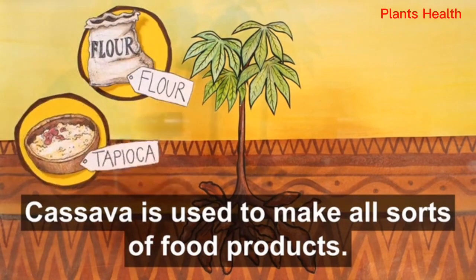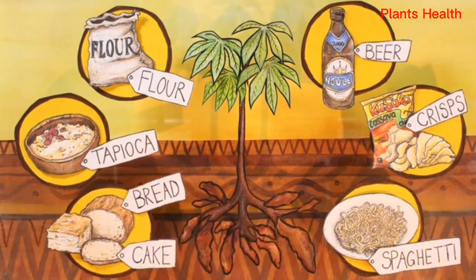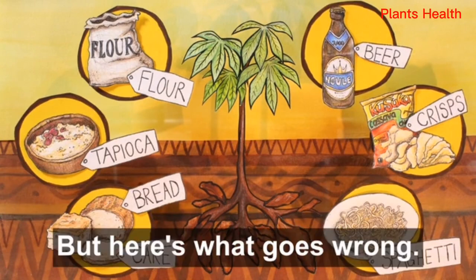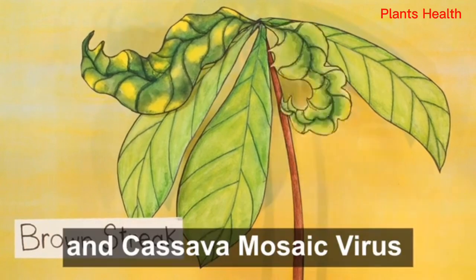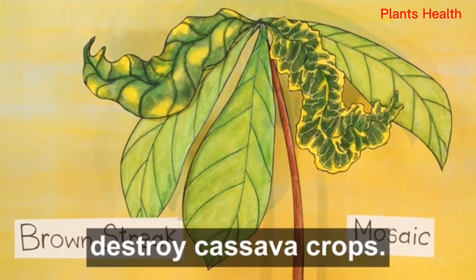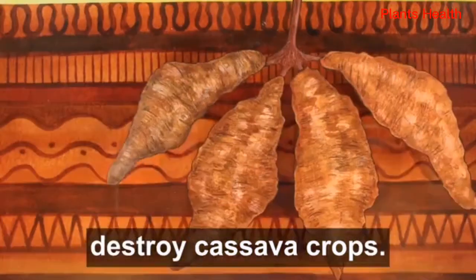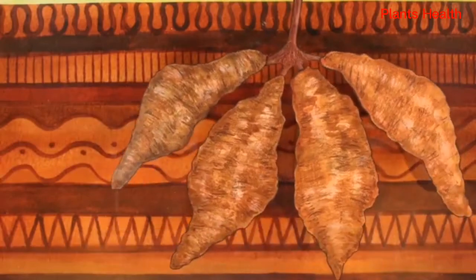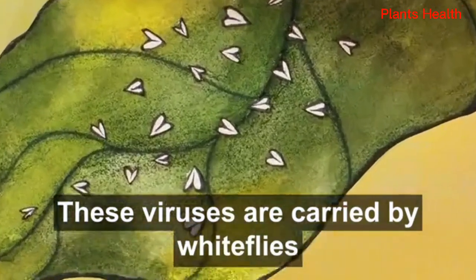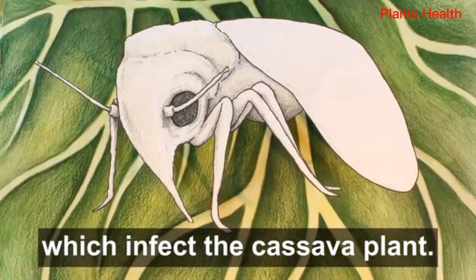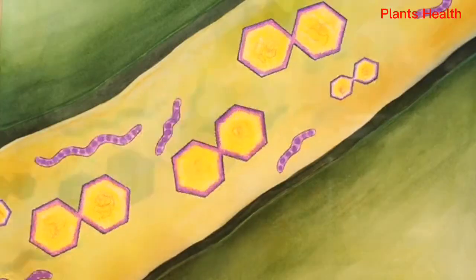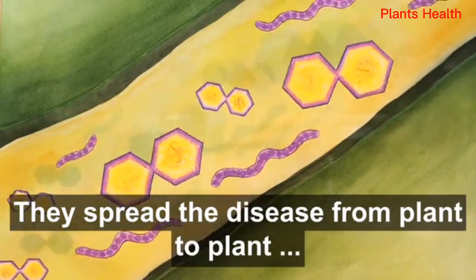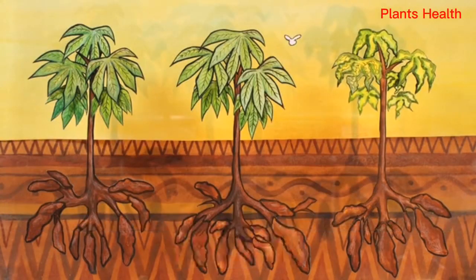Cassava is used to make all sorts of food products. But here's what goes wrong: cassava brown streak virus and cassava mosaic virus destroy cassava crops. These viruses are carried by whiteflies which infect the cassava plant, spreading the disease from plant to plant and from field to field.